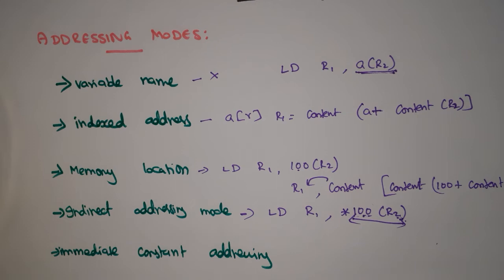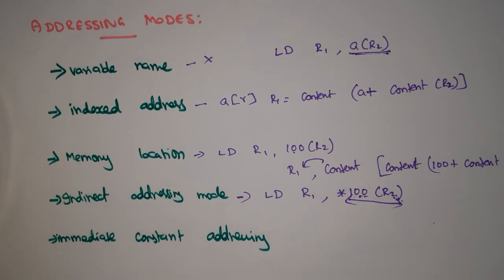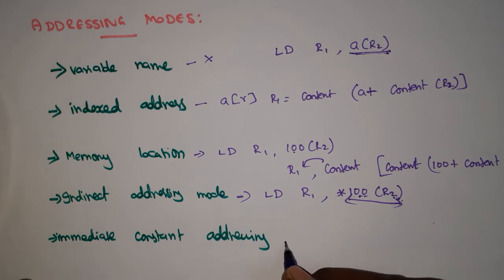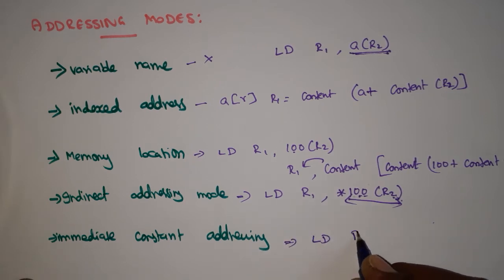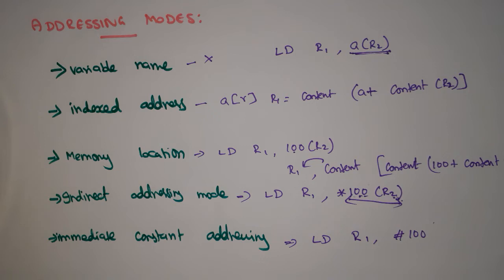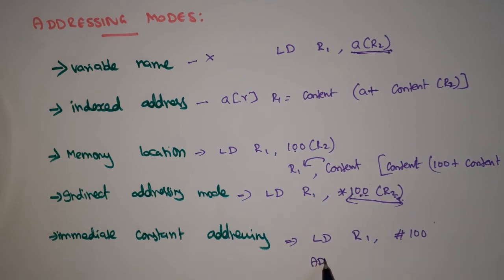Immediate addressing mode is used when you want to use a constant value directly. For example, LD R1, #100 loads the constant value 100 directly into register R1 — the hash symbol indicates it is a constant, not a memory location. Similarly, ADD R1, R1, #100 adds the constant 100 to R1 and stores the result back in R1.